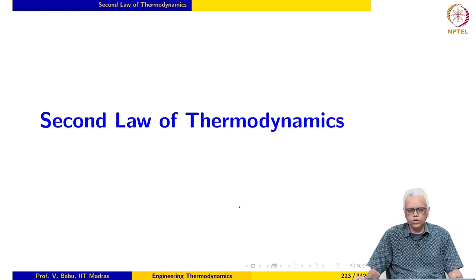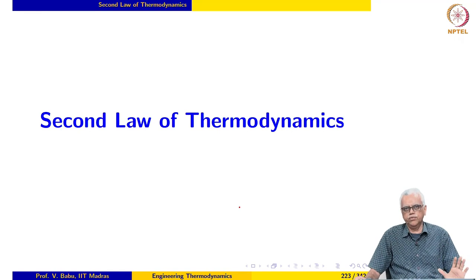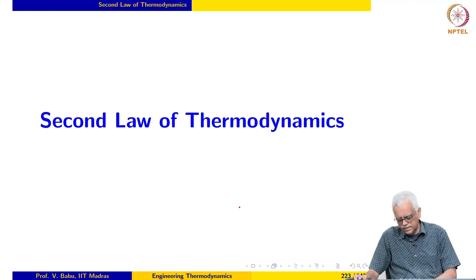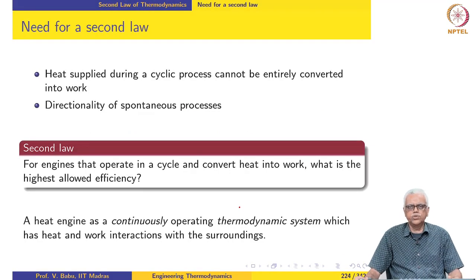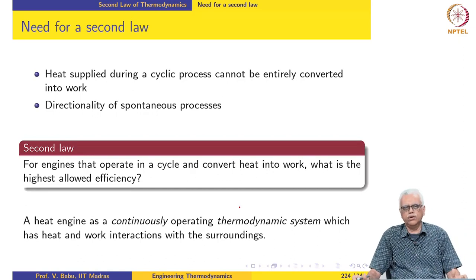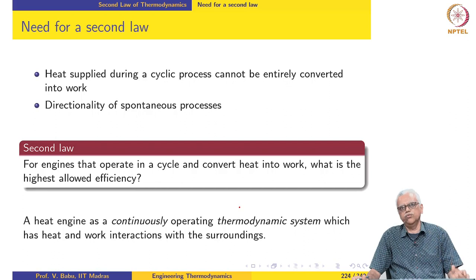We now move on to the second half of the course. Having completed our discussion of the first law of thermodynamics both for a system as well as a control volume, we are now ready to discuss the second law of thermodynamics. As mentioned during the introduction, one of the most important things we should do first is motivate the need for a second law — what was deficient in the analysis done so far using the first law, and what aspects have been absent. That provides the motivation for the second law.